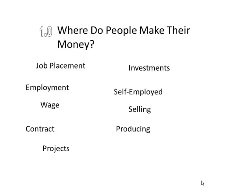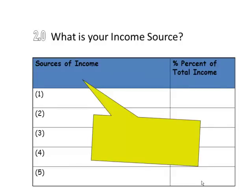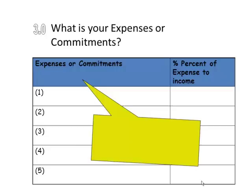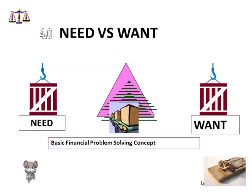When you ask yourself where do people make their money, you look at places like job placement, employment, wages, self-employed, selling things, investments, producing, entrepreneurism, contracts, projects. You have to determine what is your income source. Income source is cash coming in. And when you look at expenses — your commitments that you make — you look at cash going out. That's a basic understanding of how income and expense works in our everyday living, not only for ourselves but also for our business.